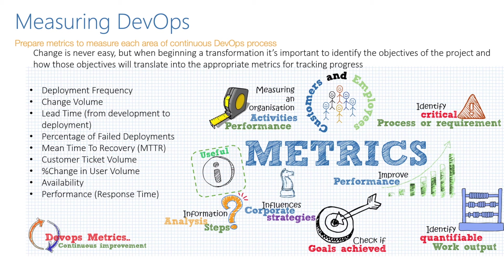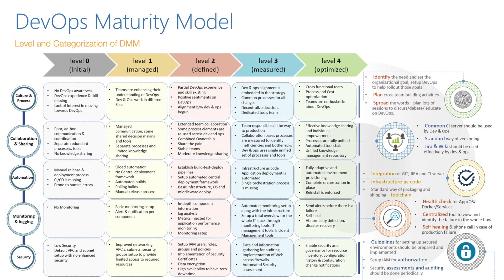Additional metrics include percentage of failed deployments, mean time to recovery, customer ticket volume, service desk volume, percentage change in user volume, platform growth, high availability, flexibility, and performance response time. You can have your logging and monitoring setup to see how available your system is, how the router is behaving, how traffic is being handled by load balancers, and how code quality is increased via testing automation.